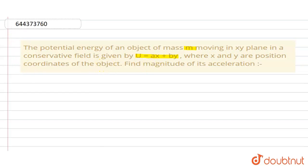In this question it is given that potential energy U equals ax plus by, and we have to find the value of acceleration with the help of potential energy. Now we know that F is given by the formula F equals minus dU by dx.